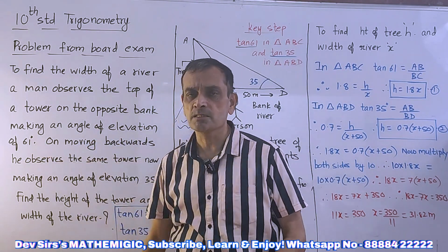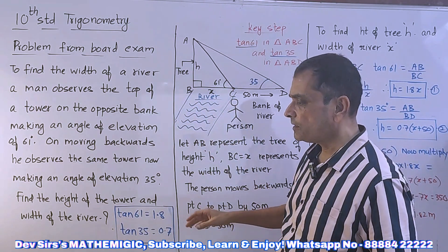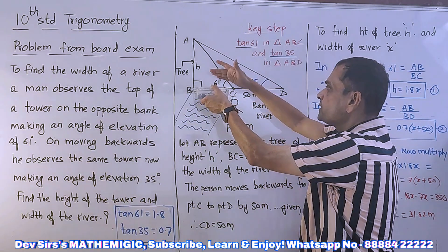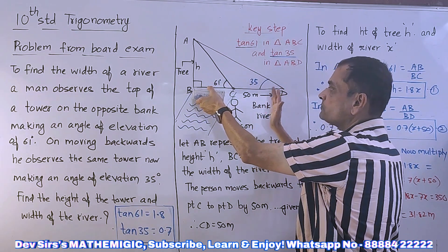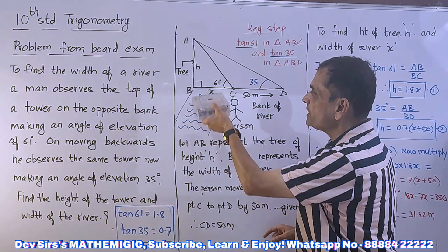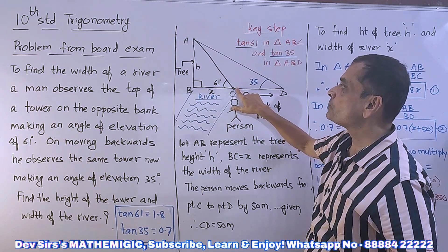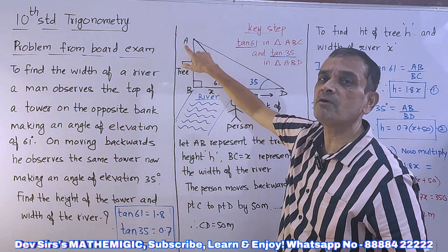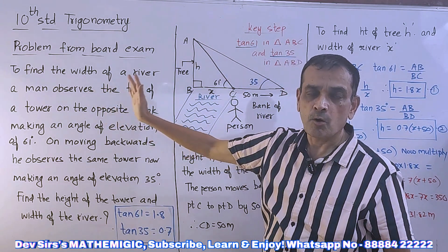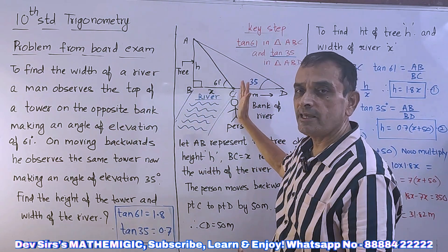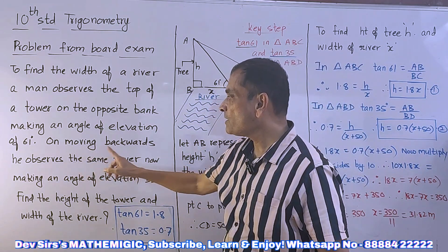I have drawn a diagram for this. This is the river bank — the river is flowing like this. This is the river, this is the river bank. On the opposite side there is another bank, and in between is the river. A person is standing on the river bank observing the top of the tower at an angle of elevation of 61 degrees — looking upward — and the tower is on the opposite bank.